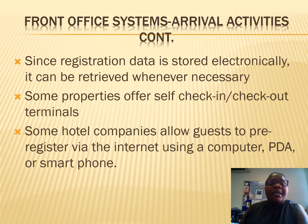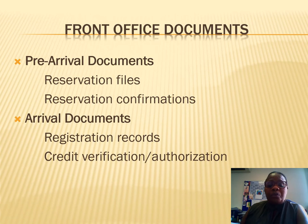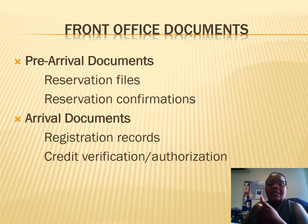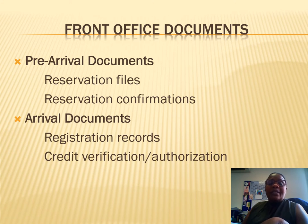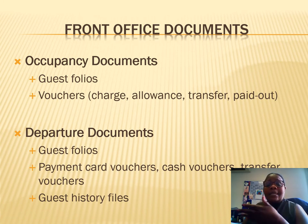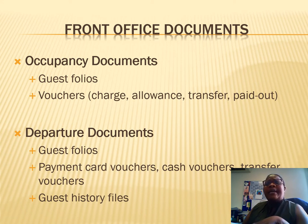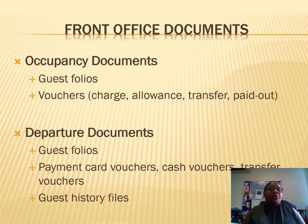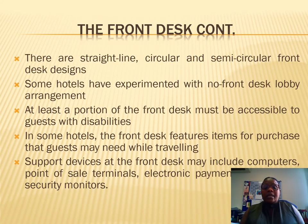When it comes to front office documents: for pre-arrival you need a reservation file and a reservation confirmation with the guest's information. For arrival, you have the registration record where you verify credit and payment authorization. During occupancy, you monitor guest folios — tracking what guests eat, drink, and use — and post everything to their account using different types of vouchers, noting whether charges are paid by the company or the guest. At departure, you produce the guest folio, which is the printed bill you present to the guest for settlement.